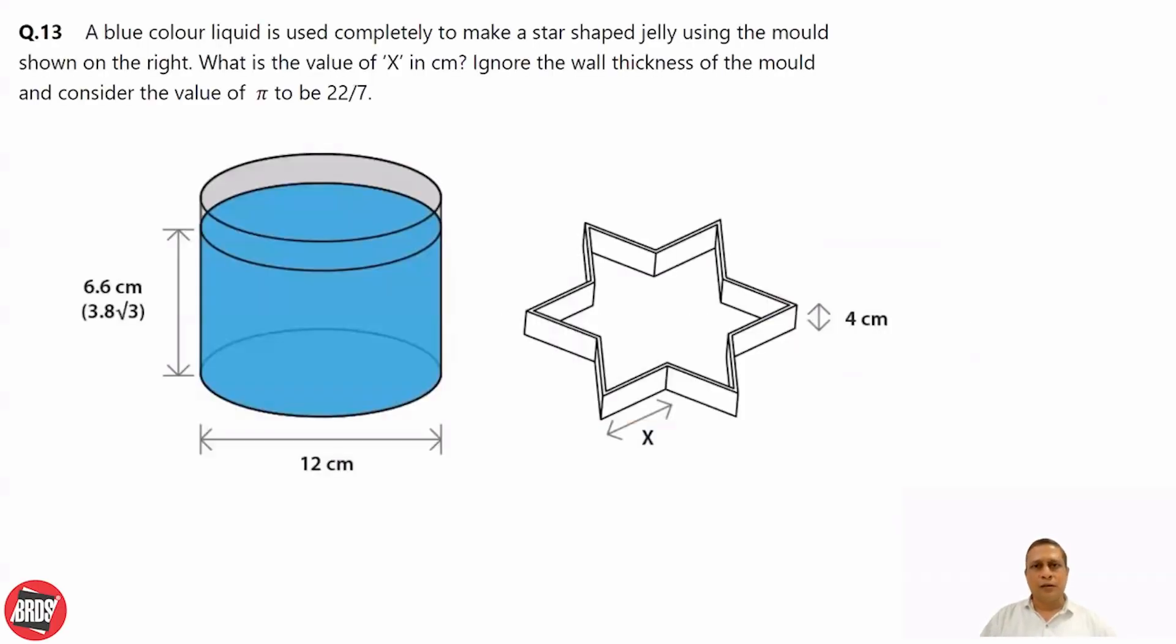Another question. A blue color liquid is used completely to make a star-shaped jelly using the mold shown on the right. It means what? Volume of this liquid and volume of this star is same.